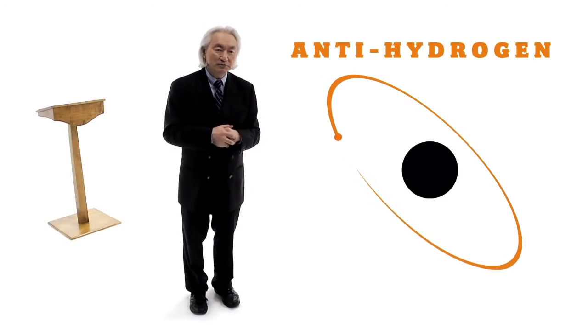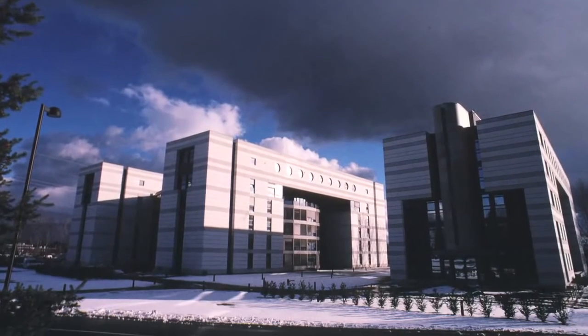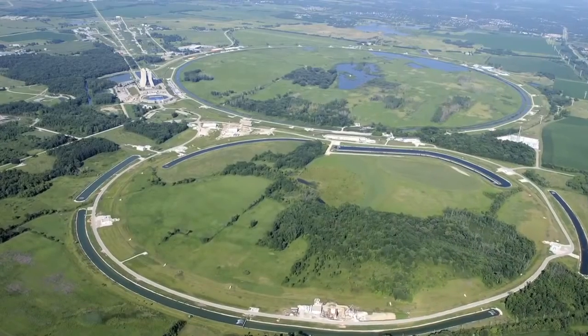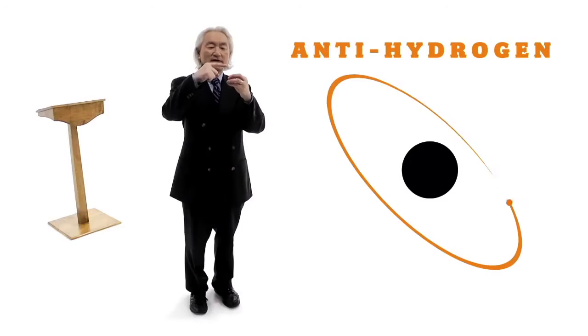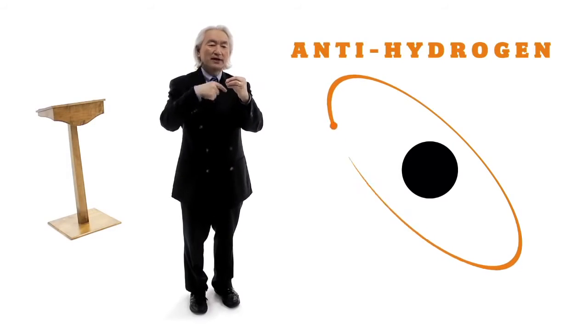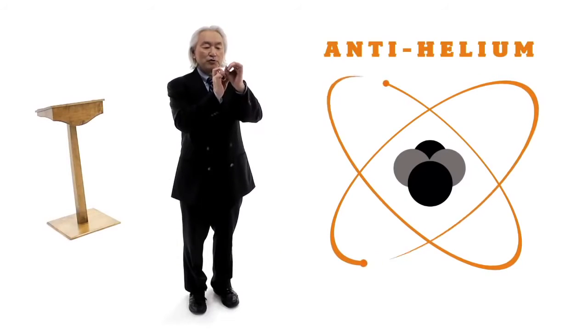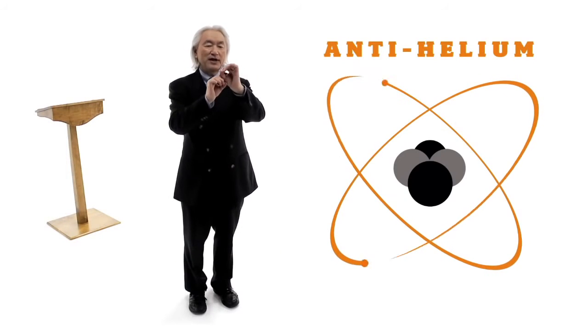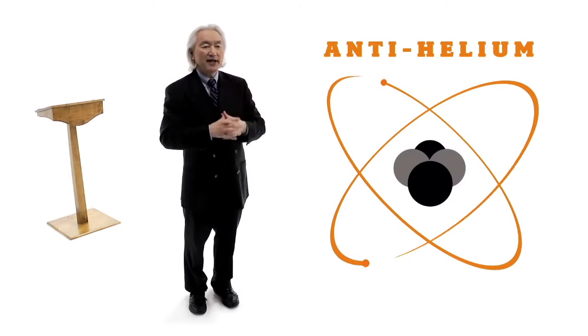This means that you can now create anti-molecules and anti-atoms. Anti-hydrogen was made at CERN, outside Geneva, Switzerland, and also at Fermilab outside Chicago, where I have anti-electrons circulating around anti-protons. And in Brookhaven National Laboratory in Long Island just recently, they detected anti-helium.